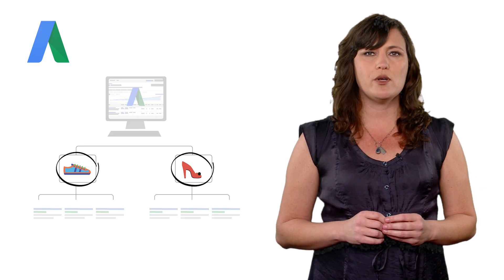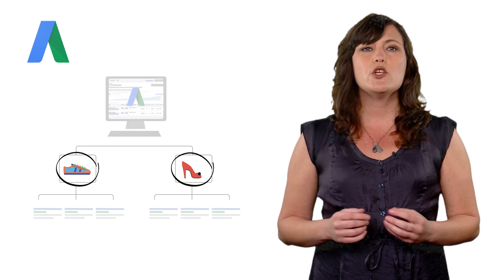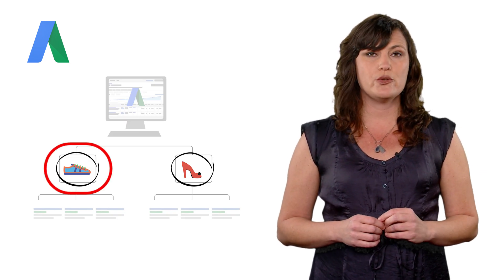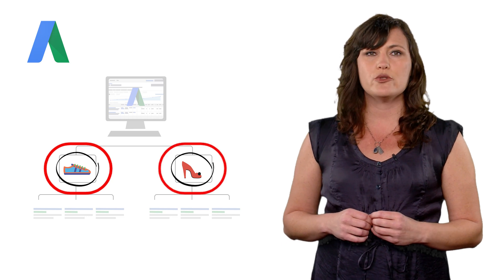Typically, you'll create one campaign for each of your business goals or product categories. For example, if you sell women's shoes, you could have one campaign for athletic shoes, and another for women's dress shoes, and so on.